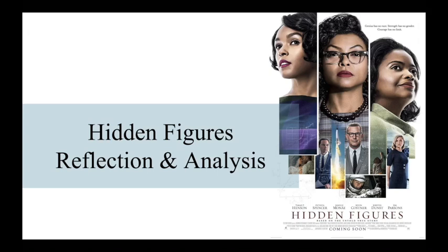Hidden Figures is a movie about three African American women who worked for NASA in the 1960s. They helped put John Glenn, the first American man, into space, but did not receive credit for this or any other brilliant accomplishment of theirs. These women faced sexism and racism not only in the workplace, but in public, at school, and even in their own homes.